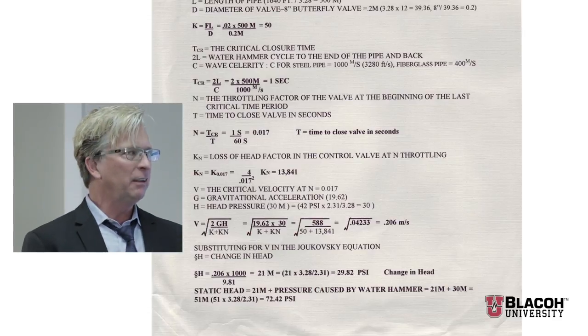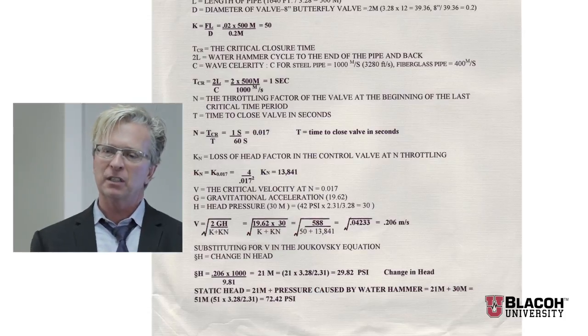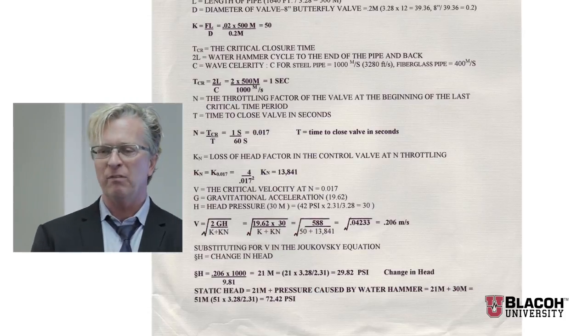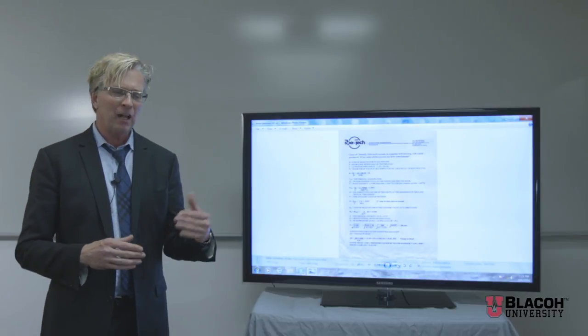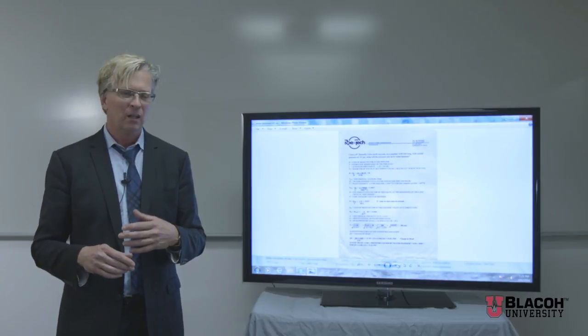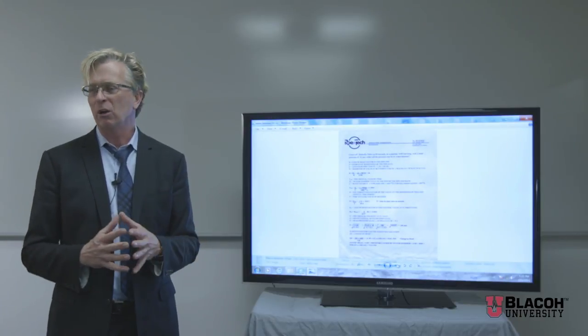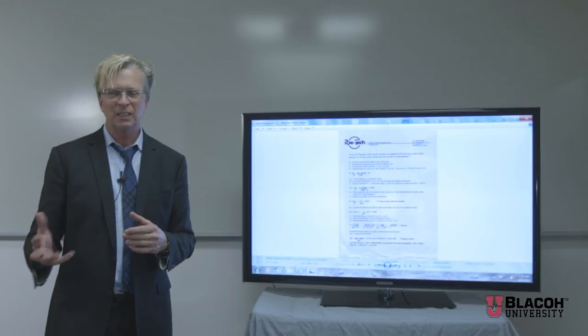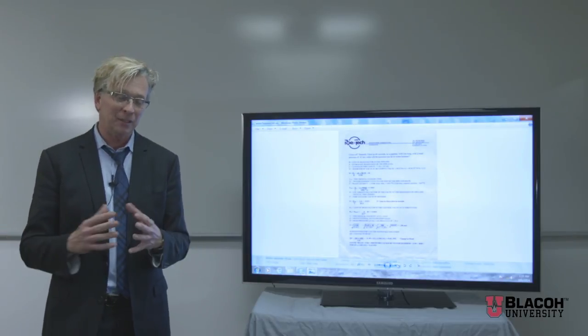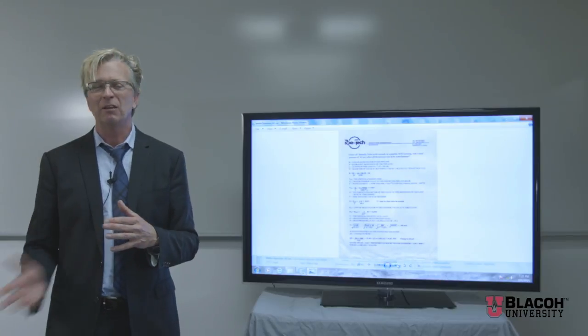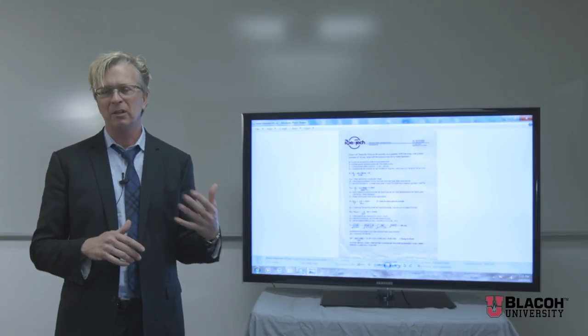The next example is almost exactly the same except we change our closing time to 60 seconds, slowing that change in velocity down. We find everything being the same except the time step. The pressure before at 20-second closure was 129 PSI, now the increase in pressure is 72 PSI.